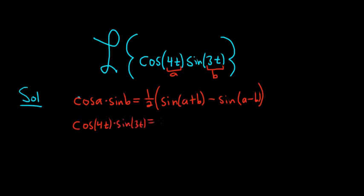That equals one-half times the quantity sine of—we add these—4t plus 3t is 7t, minus sine of—we subtract them—4t minus 3t, which is simply t.